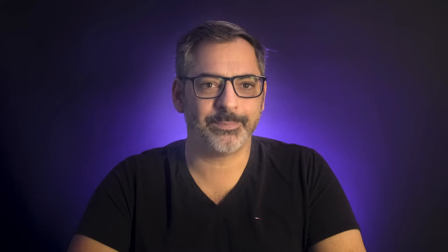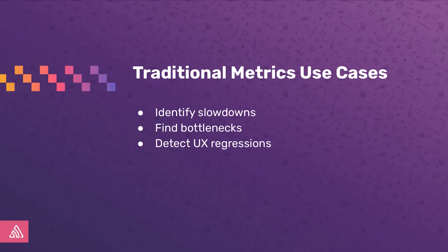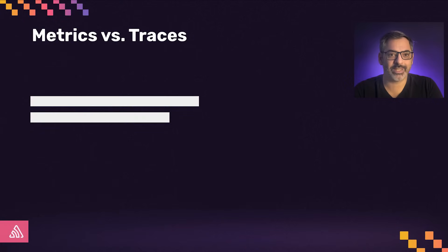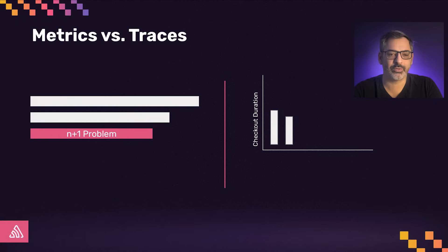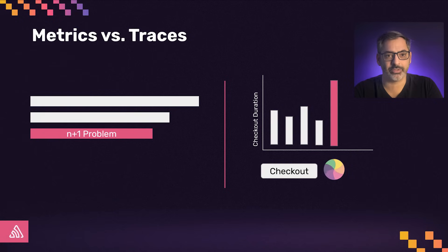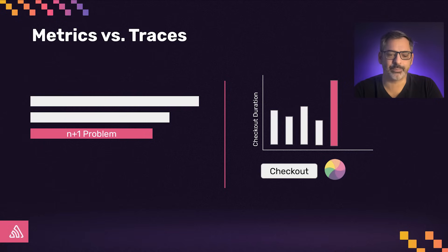Metrix are one of the key signals in observability. They help you track data points about your application over time to identify any slowdowns, bottlenecks, or other issues that can harm your user experience. While pure tracing exposes issues in your code to aid in troubleshooting user impact, Metrix let you observe the user-facing outcome and detect problems right at the interface to the user. In this way, tracing and Metrix complement each other to help developers manage applications in production.